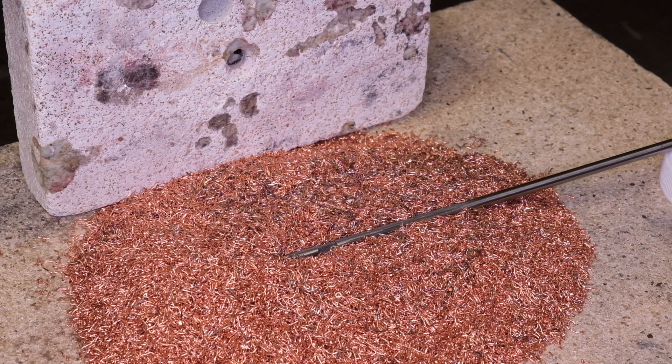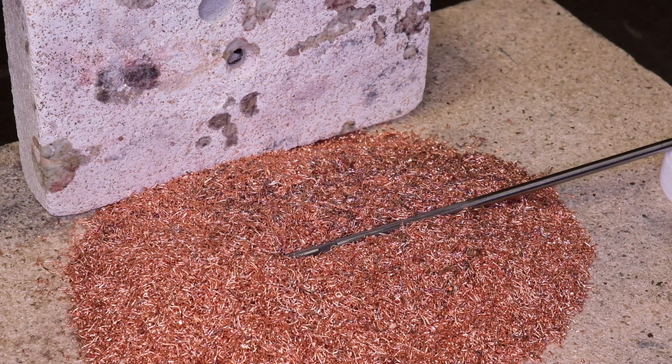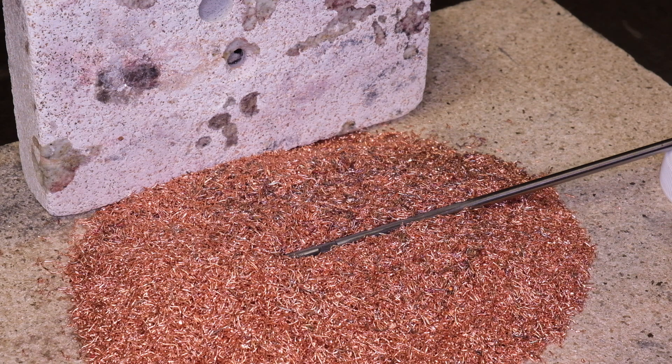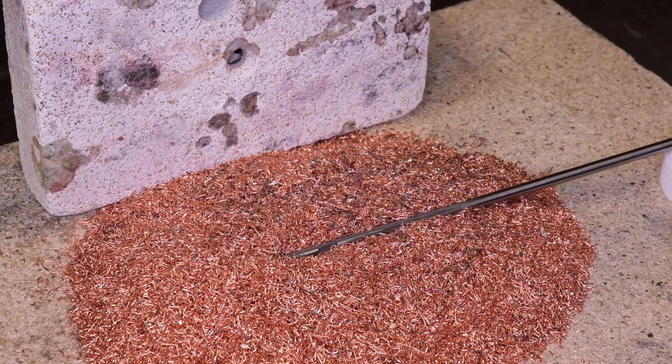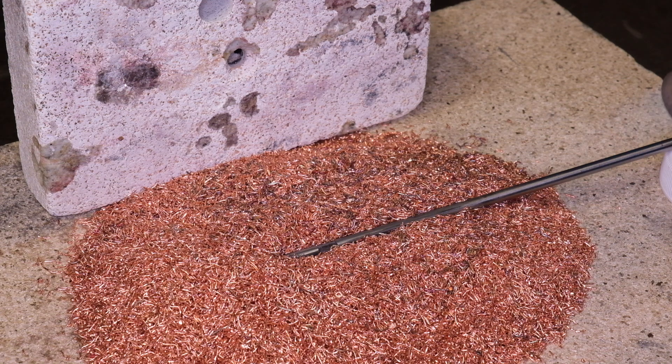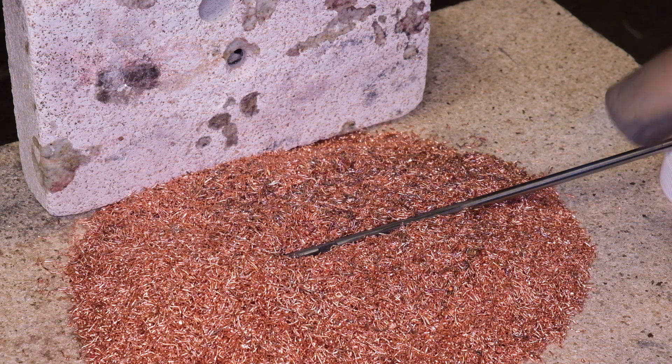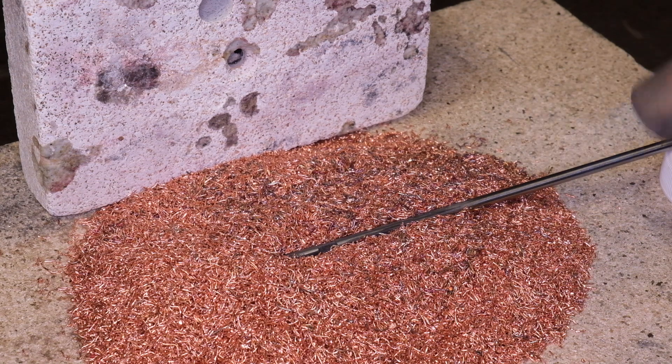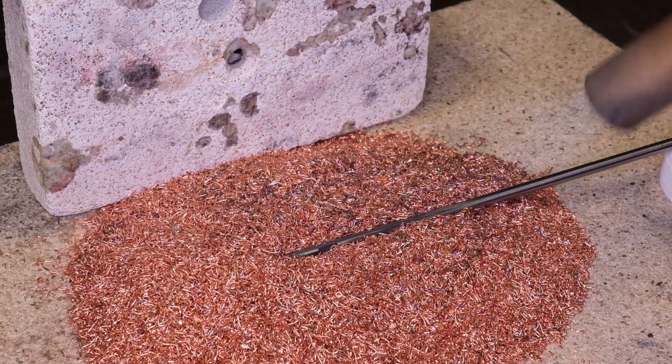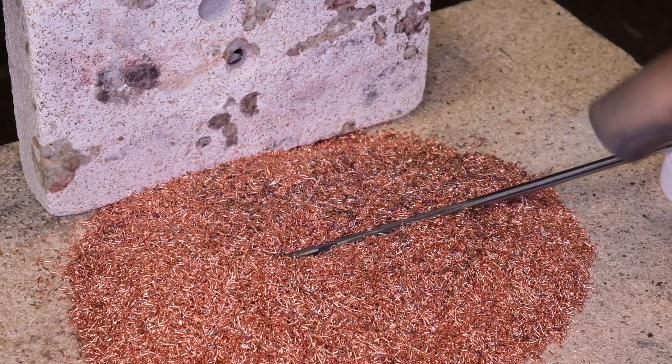What we end up with with high carbon steel like this is a tool that would be incredibly hard and resist wear but it would also be quite brittle, it would probably be very brittle and would snap when we were using it. So what we want to do is to temper that brittleness by replacing the brittleness with a bit of strength.